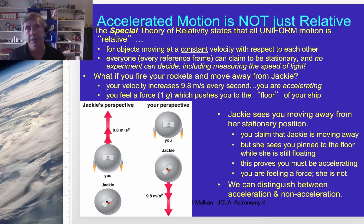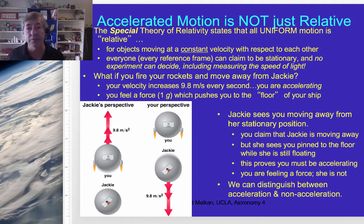Why? Because Einstein said there's no law of physics that will tell you if you're stationary or not. But one law of physics he was certainly going to take to the bank is that the speed of light is 186,000 miles per second — a universal constant. Everybody has to always agree that's the speed of light. It never goes faster, never goes slower. It can't.